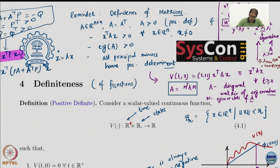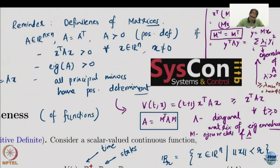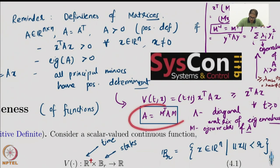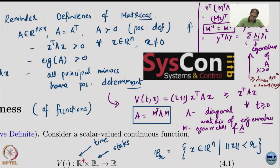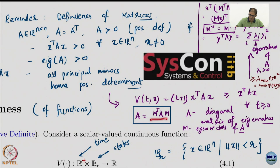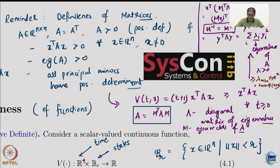How do I do that? It is pretty straightforward. I can decompose A in this form because A is a symmetric matrix. A is symmetric, therefore you can decompose it in the form M transpose lambda M, where lambda contains a diagonal matrix of eigenvalues and M is just the eigenvectors.